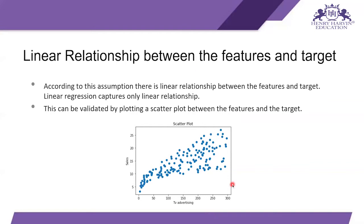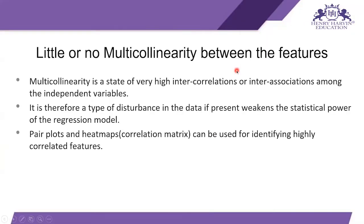The second assumption is little or no multicollinearity between the features. Multicollinearity is a state of very high inter-correlations and inter-associations among the independent variables — it is a type of disturbance in the data and weakens the statistical power of the regression model. Pair plots and correlation matrices can be used to identify highly correlated features. All features should be independent of each other.